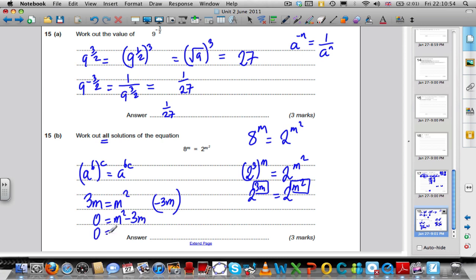Factorize. 0 equals, take an m out, m minus 3. Two numbers multiplied together to give 0. So, either m is 0, or m minus 3 is 0, which means that the answer is m is 3. And check your answers.